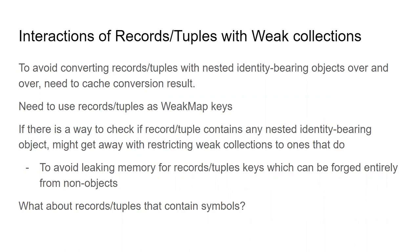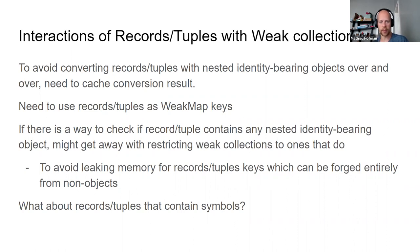There's agreement that allowing records and tuples in weak collections seems okay. One concern: if we use identity-less objects where typeof is 'object', a programmer might be surprised to find they're not allowed to put these objects into a weak collection if they don't contain identity-bearing objects. The hazard is that existing code often does: 'if typeof x === object, I can use it as a WeakMap key' — and that would now start throwing.